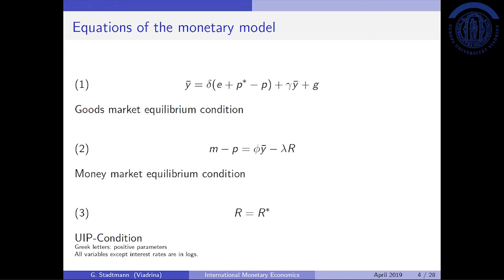The second equation is the money market equilibrium condition. On the left-hand side we have real money supply, and on the right-hand side we have real money demand. Real money demand consists of two components: the first relates to income, so the transaction motive plays a role; then we have minus lambda times r, so the opportunity cost of holding money also plays a role. The third equation is a UIP condition: with complete capital mobility, the domestic interest rate equals the foreign interest rate.